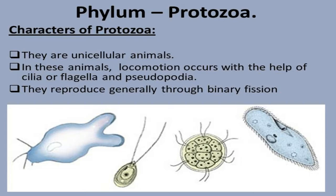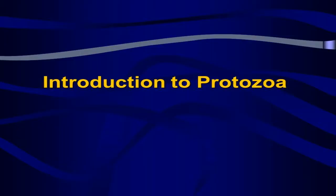In these organisms, there is no development of separate organs for different functions. For locomotion, they have no legs — they use cilia or flagella, which are thread-like structures, and pseudopodia. 'Pseudo' means false and 'podia' means feet — so pseudopodia means false feet. They reproduce through binary fission — the body splits to form a new organism.